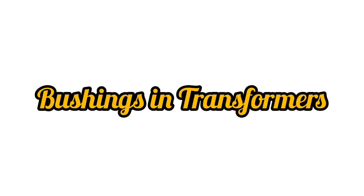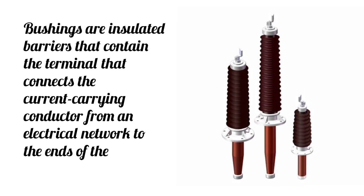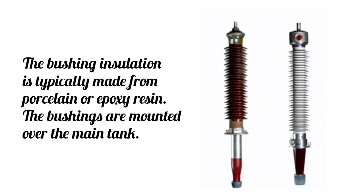Bushings in Transformers. Bushings are insulated barriers that contain the terminal that connects the current-carrying conductor from an electrical network to the ends of the transformer windings. The bushing insulation is typically made from porcelain or epoxy resin. The bushings are mounted over the main tank.